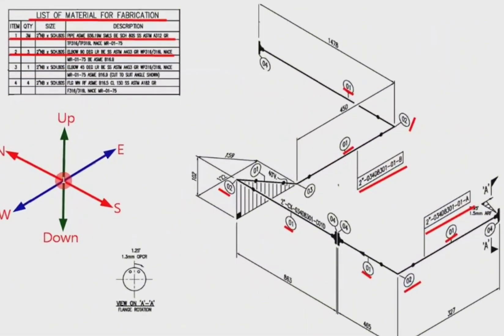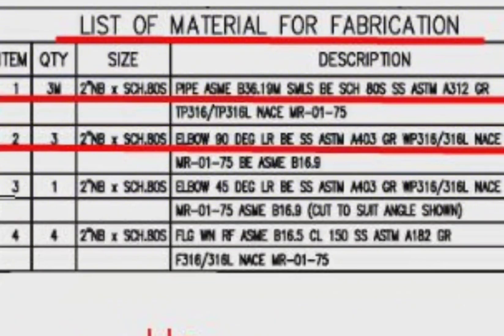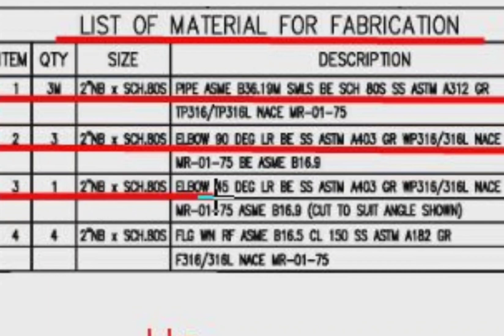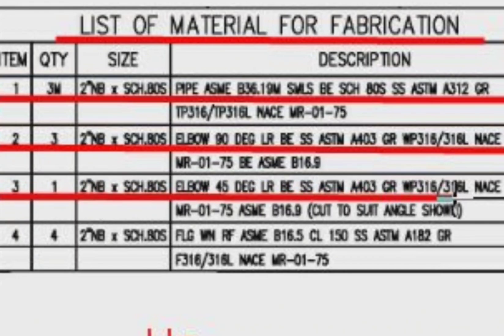Detail number three: the quantity is one piece, two inches, schedule 80S, elbow, 45 degree, long radius. The material is stainless steel.